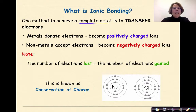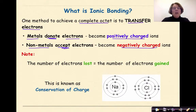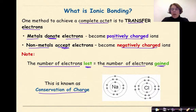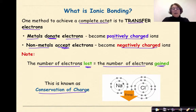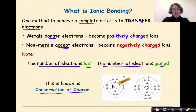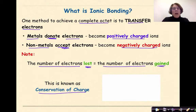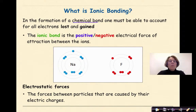One method to achieve a complete octet is to transfer electrons, where metals are going to donate electrons to become positively charged ions, and nonmetals will accept those electrons to become negatively charged ions. Note, the number of electrons lost must equal the number of electrons gained. This is known as the conservation of charge. We see the sodium donating an electron to the chlorine — they come together and form a much more stable chloride ion. Sodium donates an electron, chlorine accepts it, positive and negative come together to be more stable, and energy is released. In the formation of a chemical bond, one must be able to account for all electrons lost and gained.